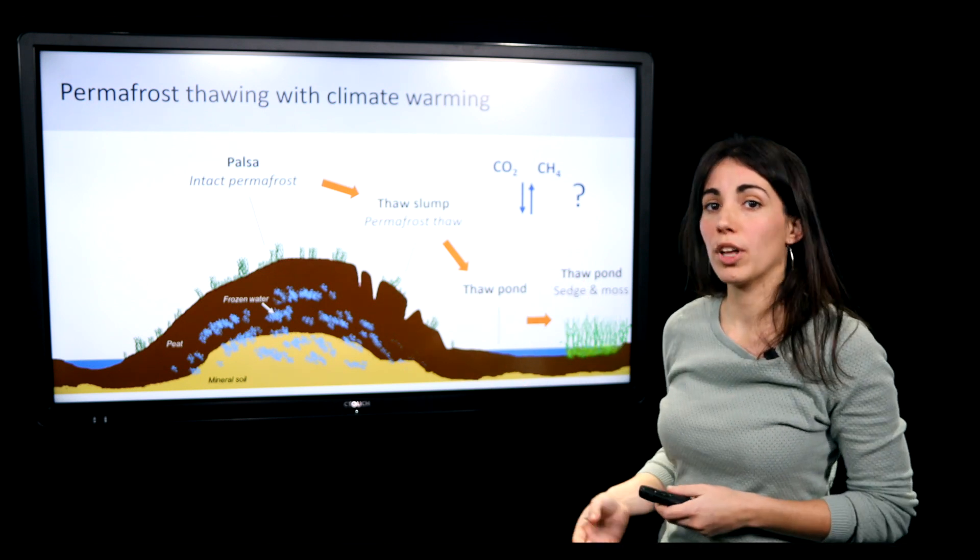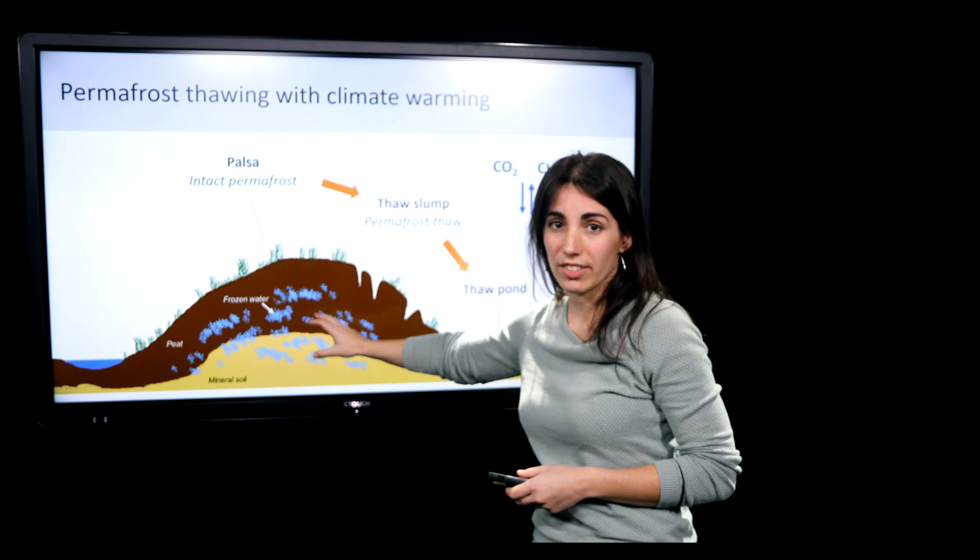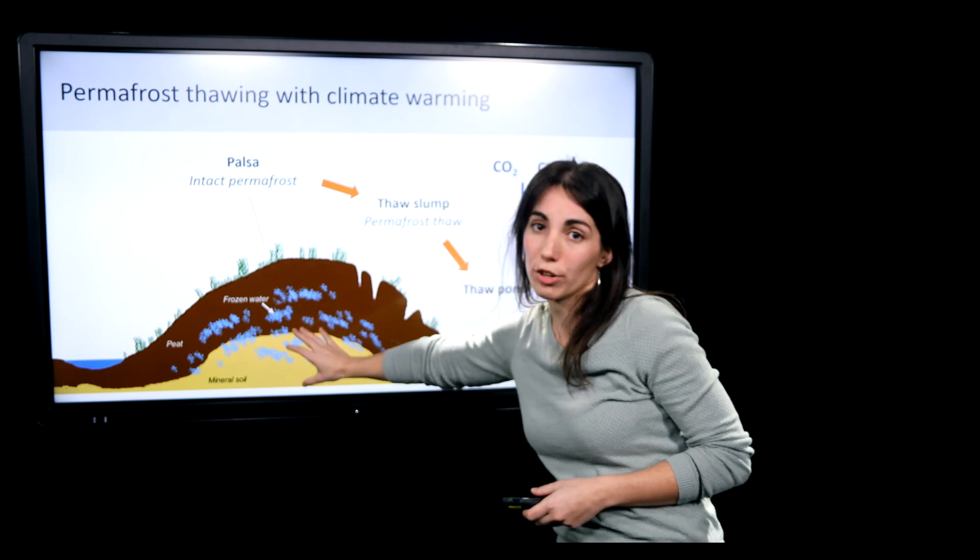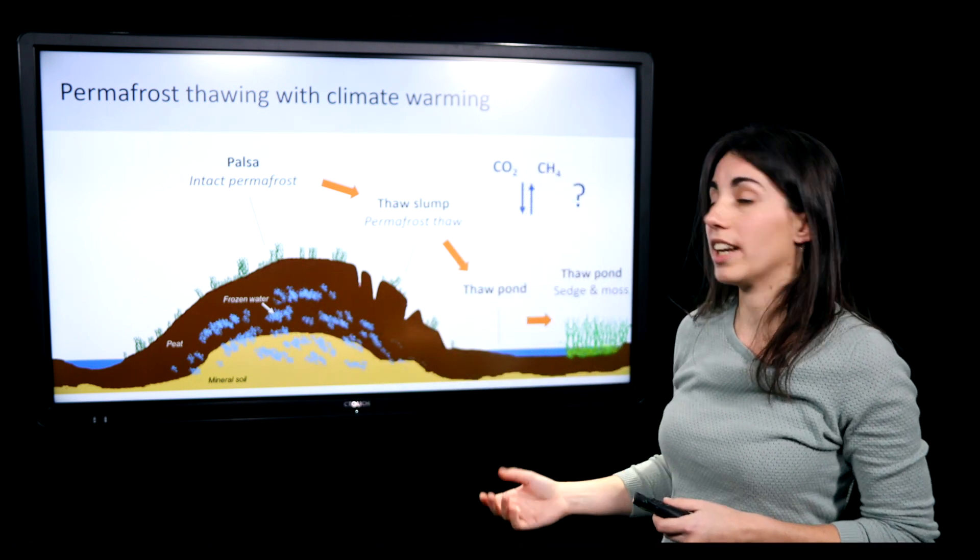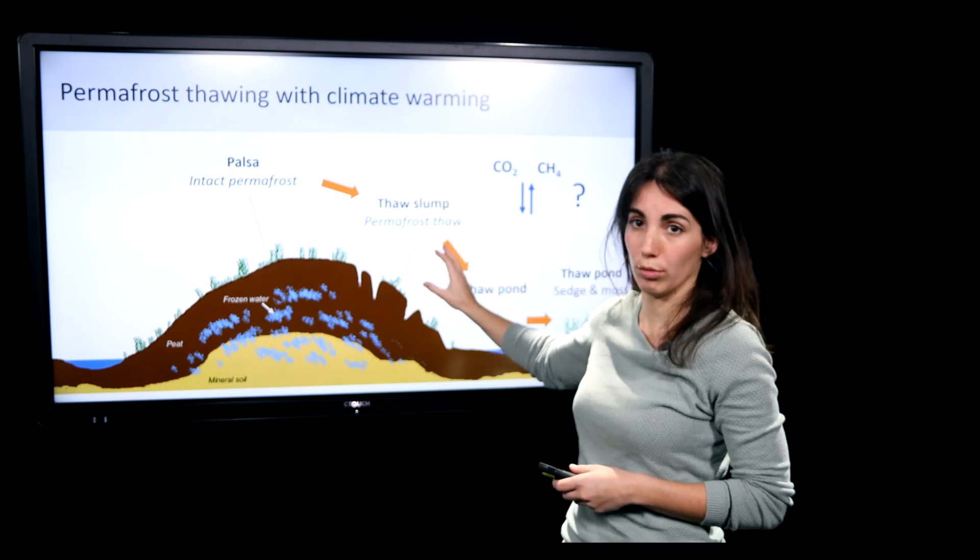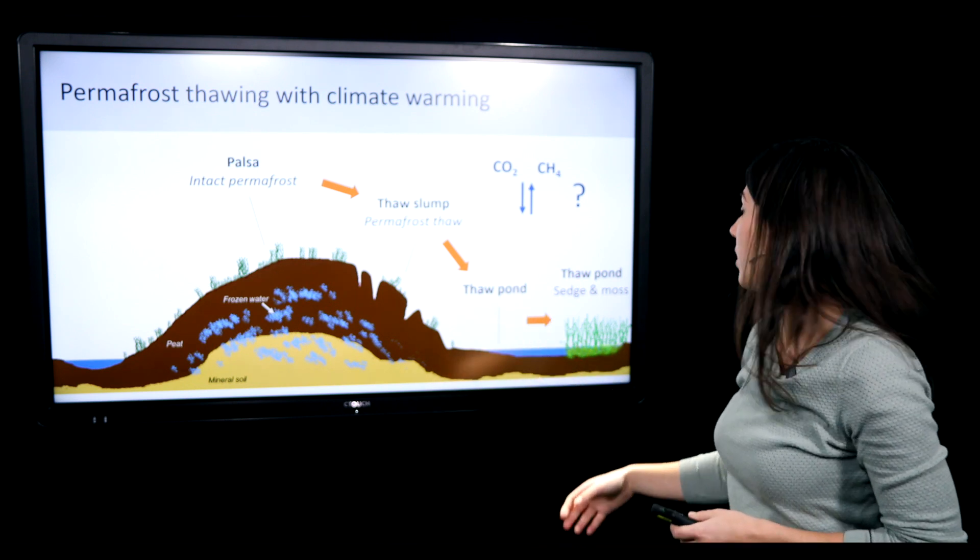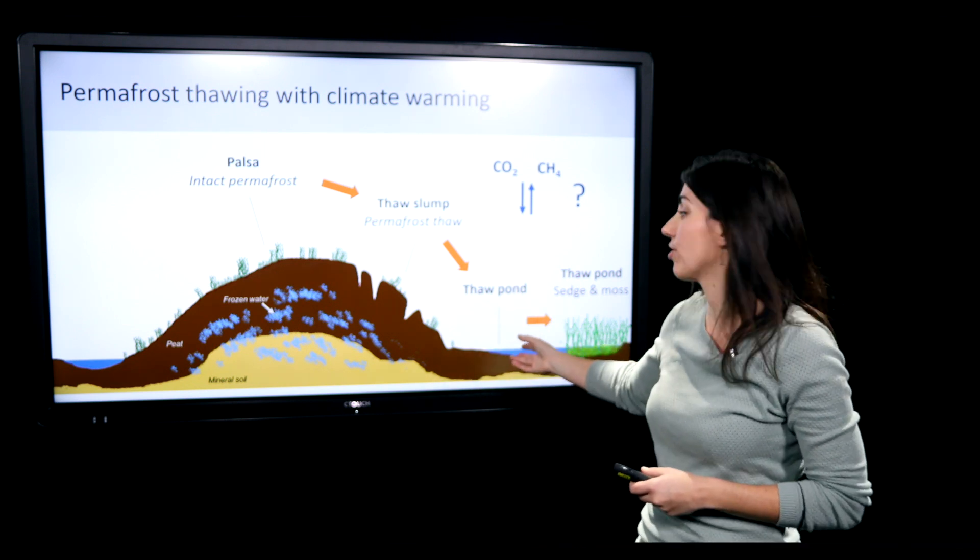And when it starts to warm, permafrost starts to thaw. This means that the frozen water in the soil is melting, and this is causing the permafrost to thaw and slump. And also this water is creating thaw ponds.